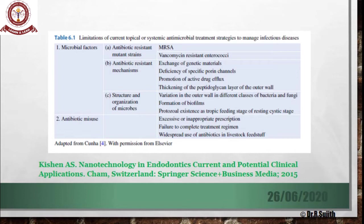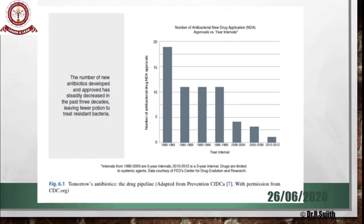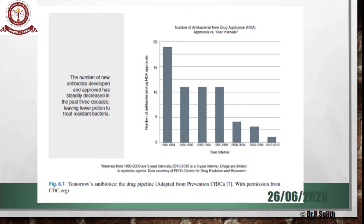Because of antibiotic resistance, the number of new antibiotics coming to market is very low. Looking at this graph showing five-year intervals, from 2010 to 2012 the number of new antibiotics was very few, whereas from 1980 to 1984 the number was very high. So new antibiotics entering the market is decreasing, yet we must tackle resistant microorganisms and reduce antibiotic misuse.